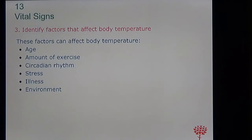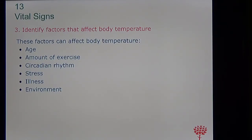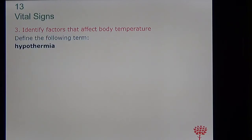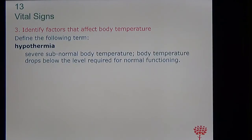What factors affect body temperature? As we get older the body temperature changes. Exercise, circadian rhythm, stress, illness, and environment can all alter the result. If the environment is very cold, temperature might be low; if it's very warm, temperature might be high. Hypothermia is the medical term for when somebody has a severely subnormal body temperature — when it drops below normal level.